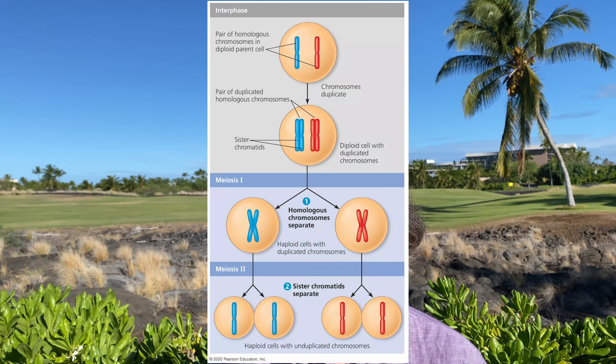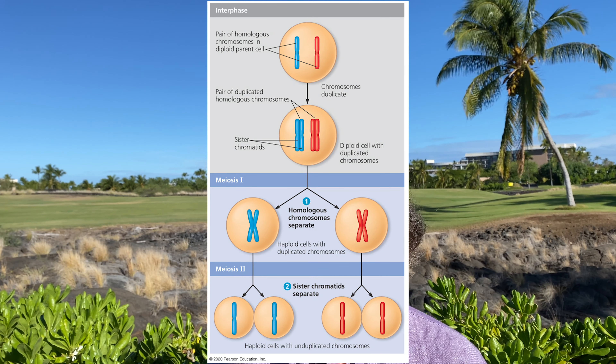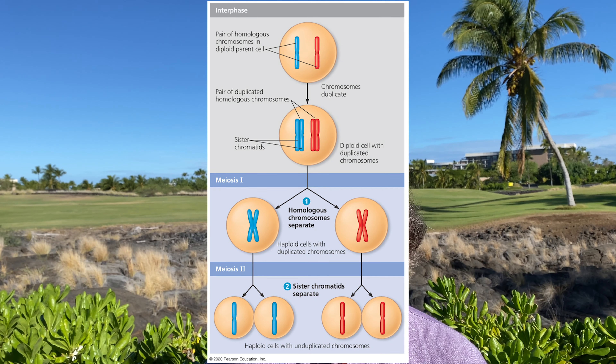Several steps of meiosis closely resemble the corresponding steps in mitosis, but there are some very key important differences. The two really big differences are that homologous chromosomes pair up side by side, and there are two consecutive cell divisions.